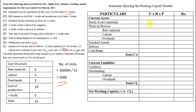We now prepare the statement showing working capital needed. The format uses: units × rate × period = amount, under current assets and current liabilities. Under current assets, number one is stock of raw material: 5,000 units × rate 5 × 2 weeks = 50,000. Under WIP, raw material is: 5,000 × 5 × 2 = 50,000.